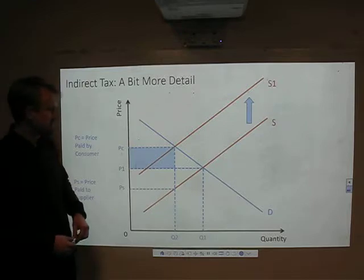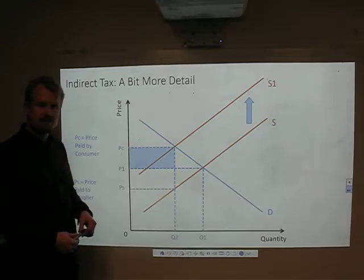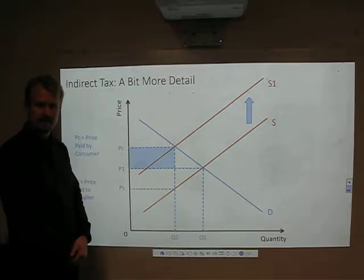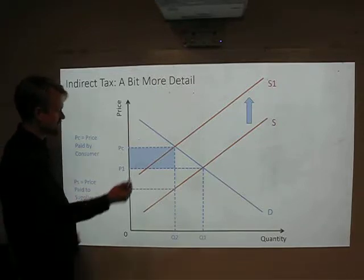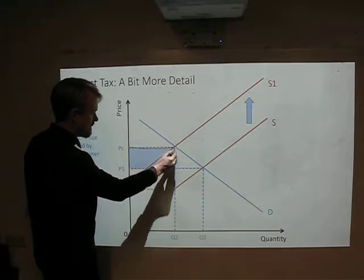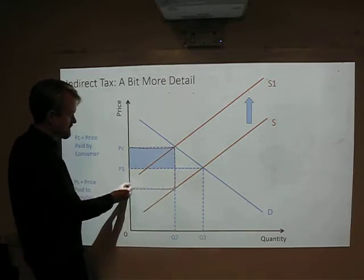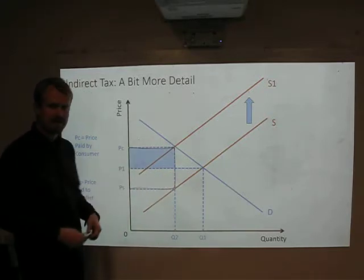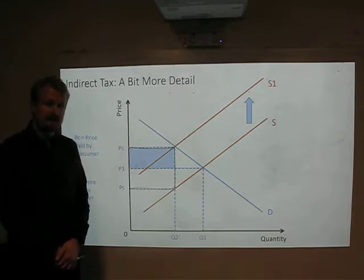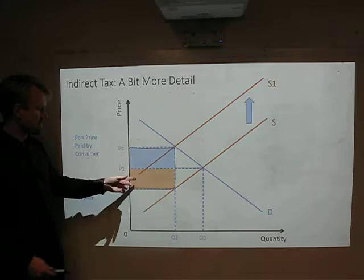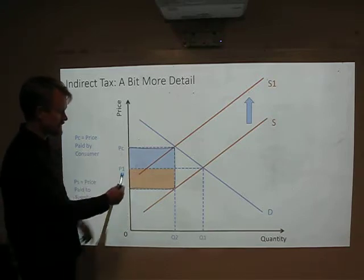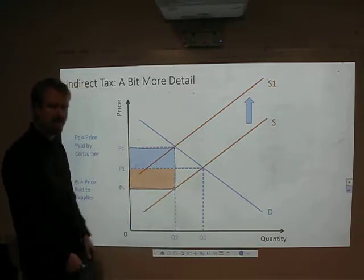What this means is that an area of consumer surplus, which no longer exists, which used to be from the consumer, is now part of the tax. Because this tax is going to be an area of this entire square here. That's going to be the value of the tax. This blue area used to be consumer surplus, now it's part of the tax. This orange area here used to be producer surplus in the old equilibrium and is now part of the tax.